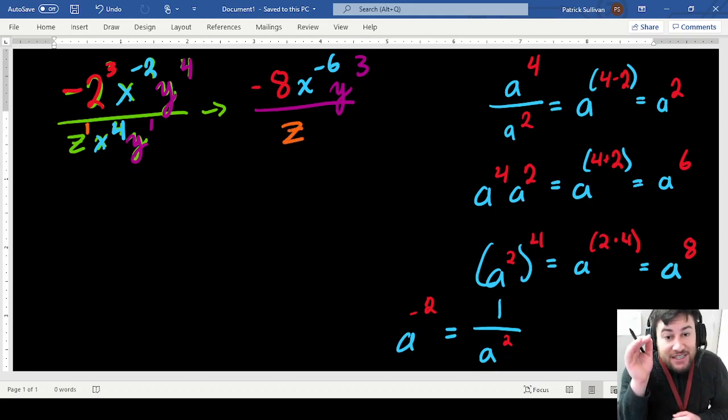But this is not a simplified answer. Sorry, I should mark that as orange. This is not our simplified answer, because if you notice right here, the x is raised to the negative sixth power. I can't have that. I can't have a negative exponent.